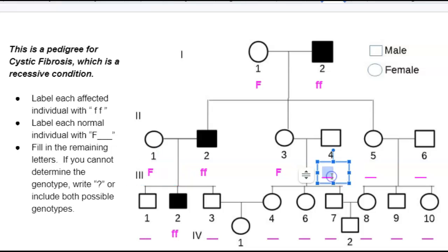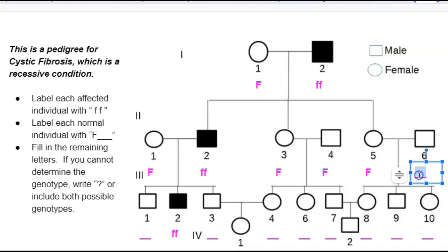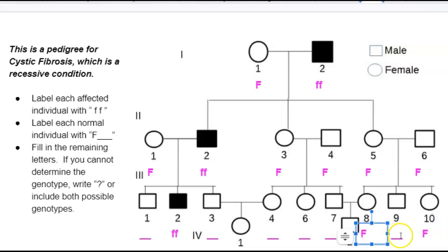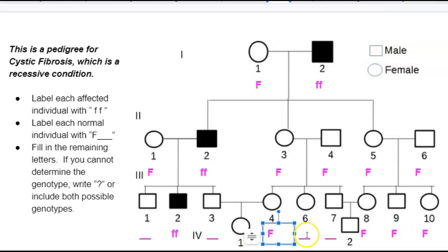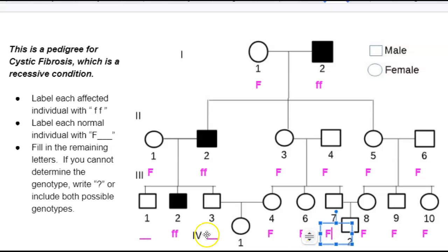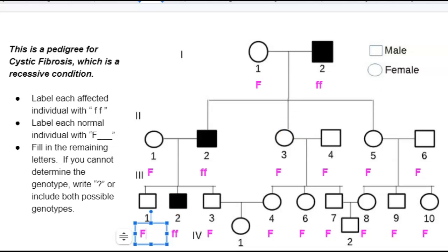We don't know if they're big F, little f, or big F, big F, so we're just going to write one F for now and come back to fill them in later. I always say start with your shaded individuals, so let's start up top. We know this guy is little f, little f.